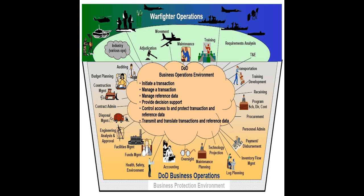The Federal Trade Commission Act regulates all forms of advertising, including online advertising, and states that advertising must be truthful and non-deceptive. Using its authority under Section 5 of the FTC Act, which prohibits unfair or deceptive practices, the FTC has brought a number of cases to enforce the promises in corporate privacy statements, including promises about the security of consumers' personal information. As a result, any corporate privacy policy related to e-commerce activity may be subject to enforcement by the FTC.